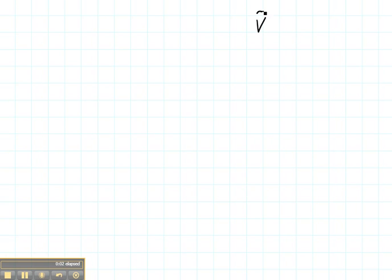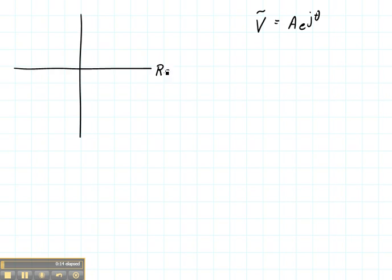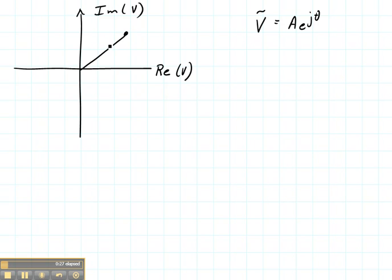Now that we have our voltage in the phasor domain, let's see how we use complex numbers to handle this voltage. The complex plane has a real axis and an imaginary axis. The vertical axis is imaginary, and the horizontal axis is real. When we plot this voltage, we plot it as having a magnitude of A and a phase of theta, which is measured with respect to the real axis.